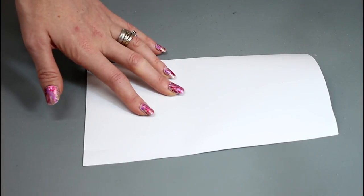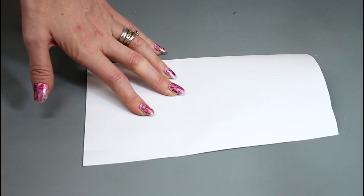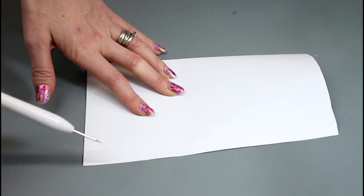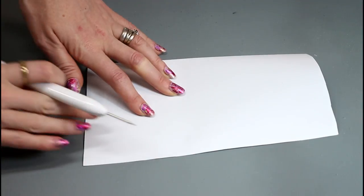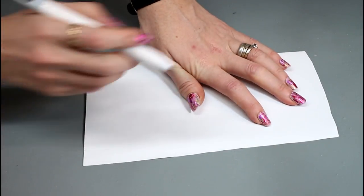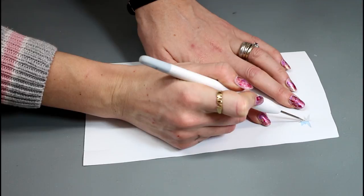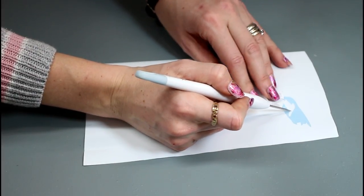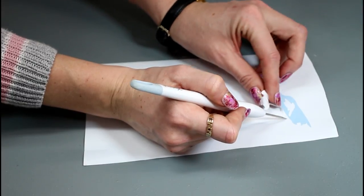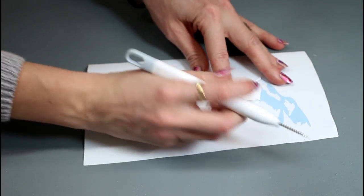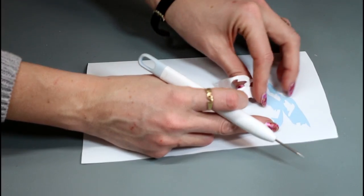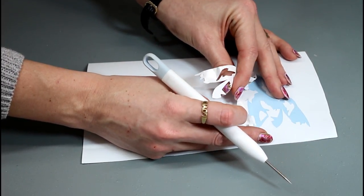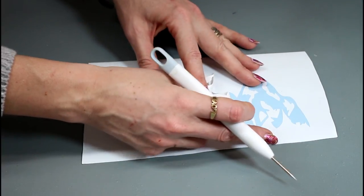When you're using vinyl as a stencil, you're going to use it slightly differently. So usually we weed around the outside of our design. However, with a stencil, you're actually going to weed out the design itself because whether you're using paint or etching cream or whatever you're using, you want the actual design to be transferred. So in order to do that, it's the design itself that you're going to remove if you're creating a stencil.